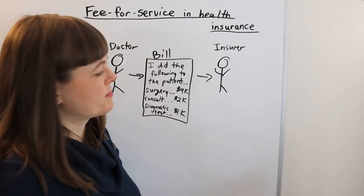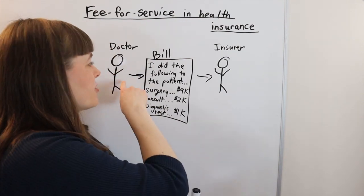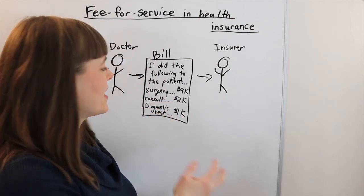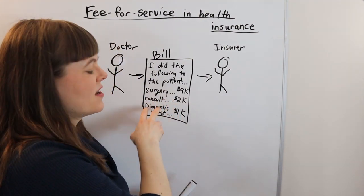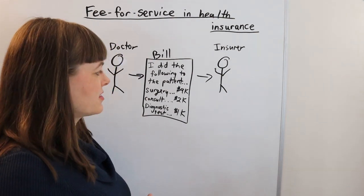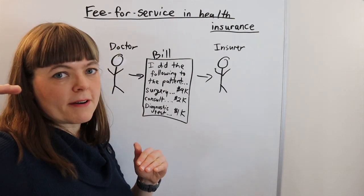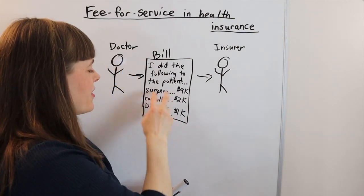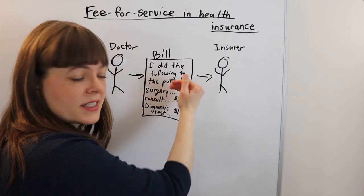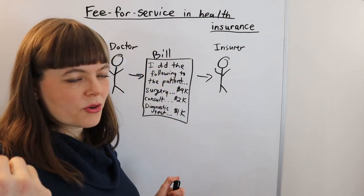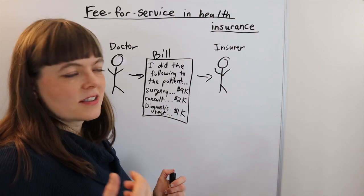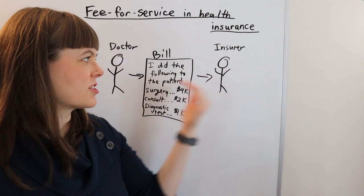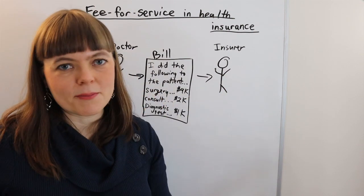One problem with this payment scheme is that there's an incentive for the doctor to do more things to the patient than necessary — to invite them in for more consultations, to require office visits when online care has a lower payment. There are lots of incentives for the doctor to make sure the list of things on the bill is both lucrative and long. That's the problem with fee-for-service and the reason why there are other mechanisms for insurers to pay doctors, which will be covered in other videos.